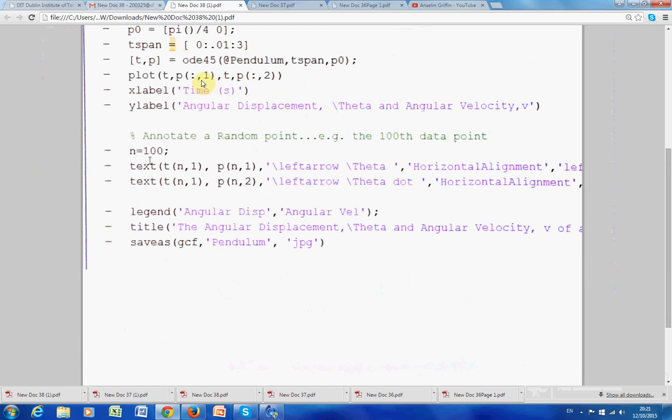So, here, all the rows in the first column is the displacement. And all the rows here is the solution to the second first order differential equation. In other words, the solution to the acceleration. And that will give us the angular velocity.